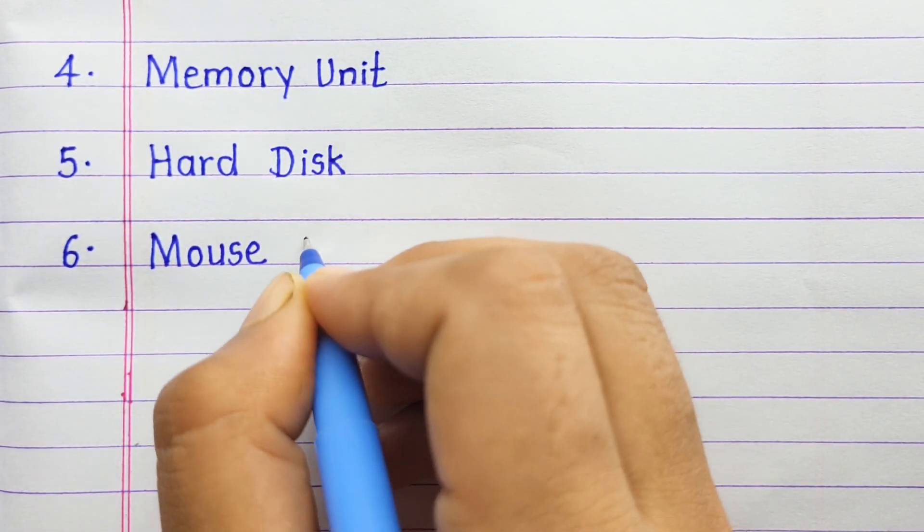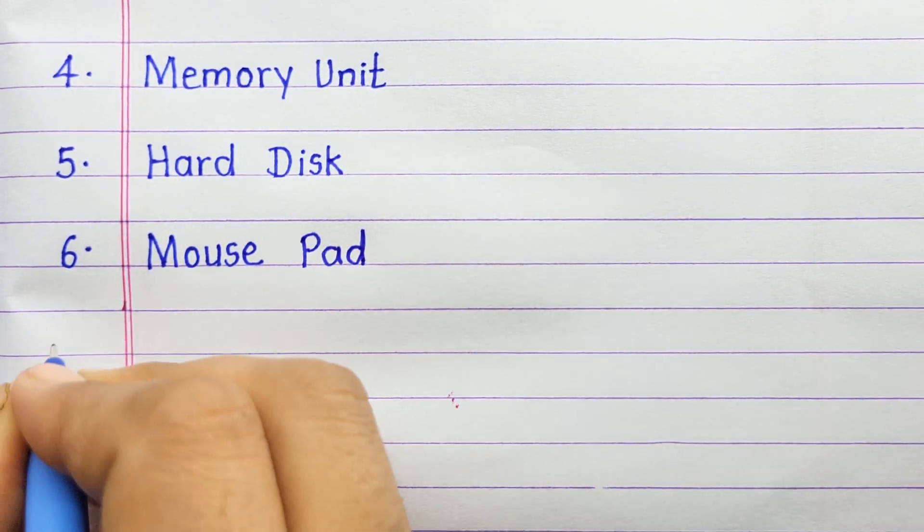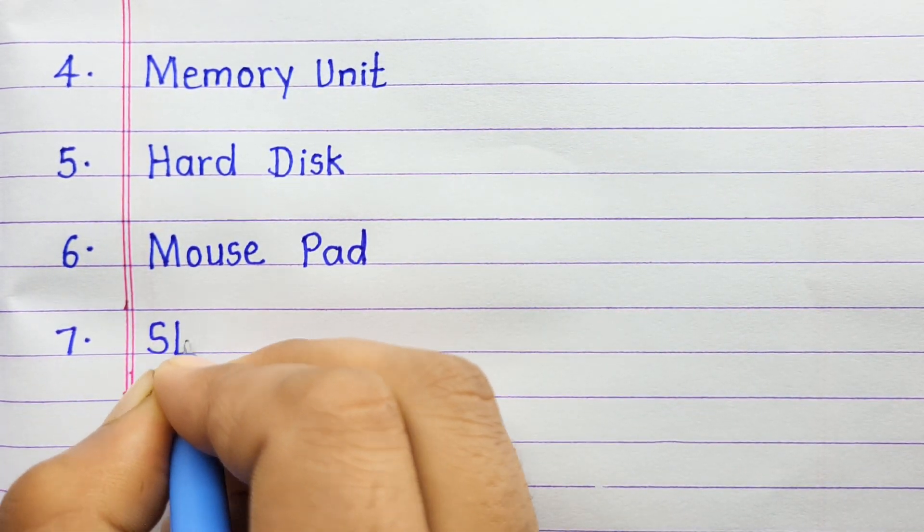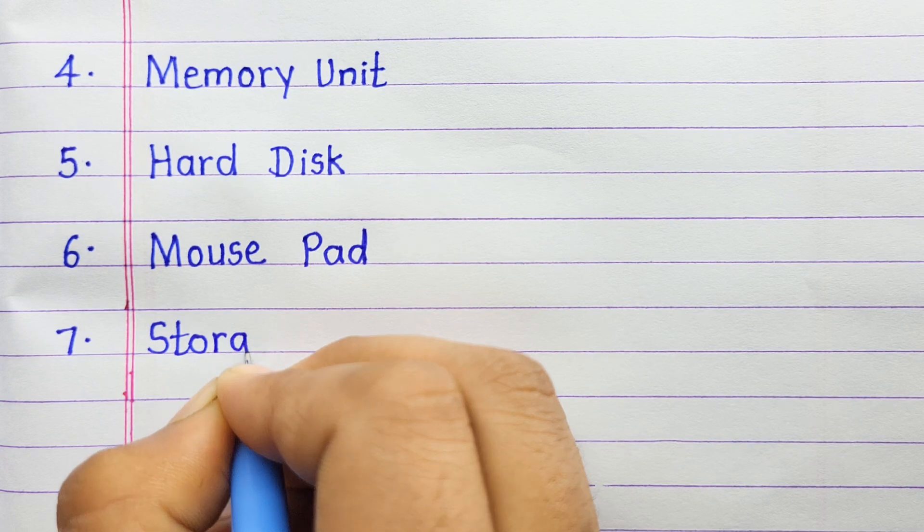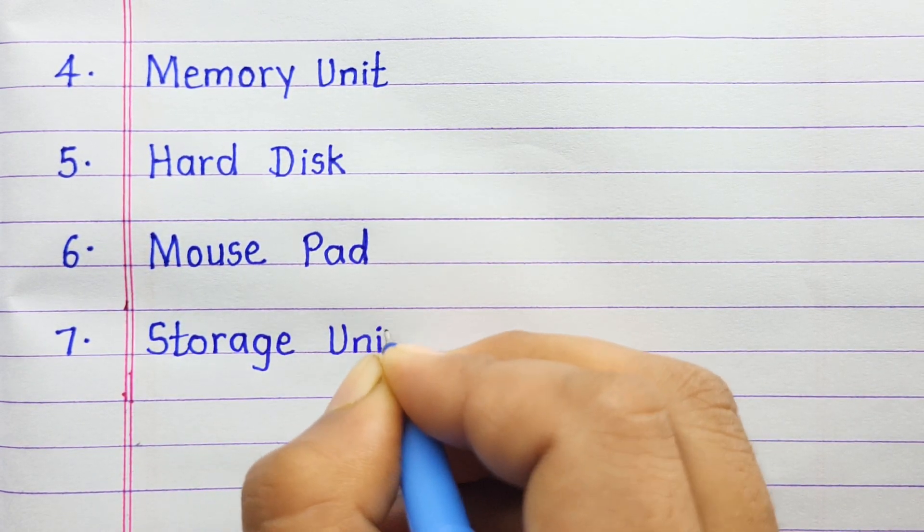Number six: mouse pad. Number seven: storage unit.